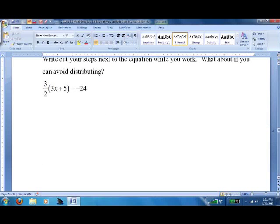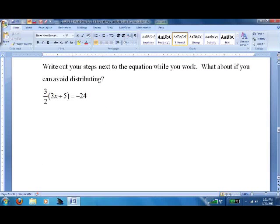But sometimes you can make your life a little bit easier by writing out your steps next to the equation while you work, by avoiding distributing. So I'm going to rewrite this down here. 3 halves times 3x plus 5 equals negative 24. I'm also going to write it out up here, because this way we'll do it what I'll call the challenging way, and then we'll do it the easier way.